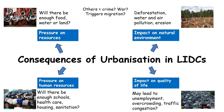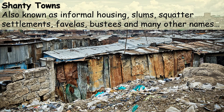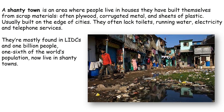The final consequence of urbanisation in LIDCs is shantytowns. These are also known as informal housing, slums, squatter settlements, favelas, and busties, among many other names. This is where people from the countryside who lack skills and qualifications move to the city to try to find a job, but when they get there they can't afford rent or to buy a house. So they end up building their own houses out of materials they can find — plywood, corrugated metal, sheets of plastic. They lack services such as toilets, running water, and electricity because they are illegal. Shockingly, one billion people across the world live in these areas that they have built themselves.